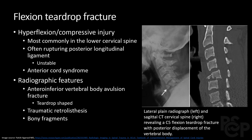There are two types of teardrop fractures: flexion and extension, and both are considered compressive injuries. Flexion teardrop fractures more commonly occur in the lower cervical spine and typically disrupt the posterior longitudinal ligament, resulting in an unstable fracture. If there is significant bony retrolisthesis, you should be concerned for cord injury. Radiographically, the anteroinferior vertebral body is avulsed, with associated retrolisthesis concerning for canal stenosis or cord injury. The best follow-up imaging for that is MRI.